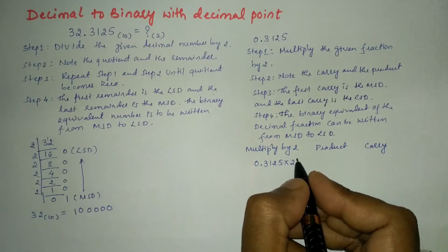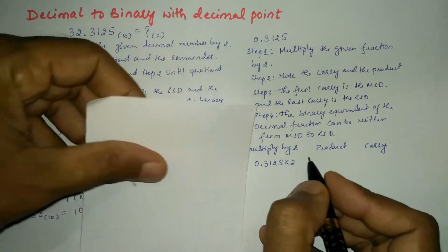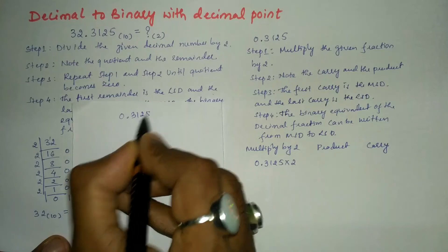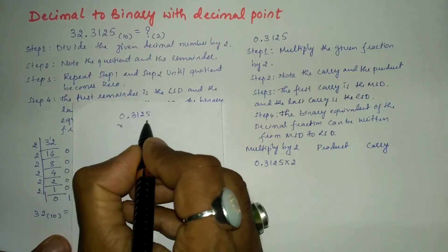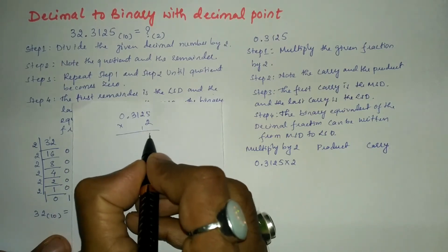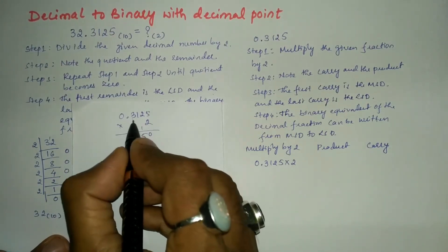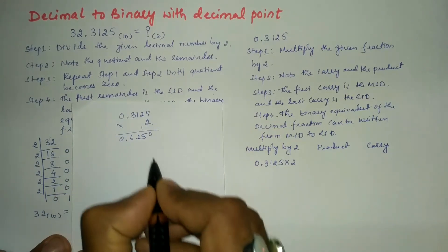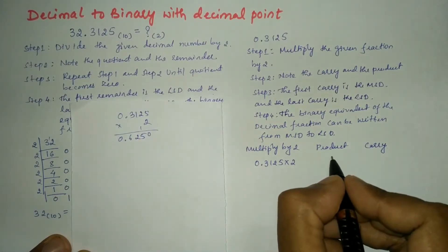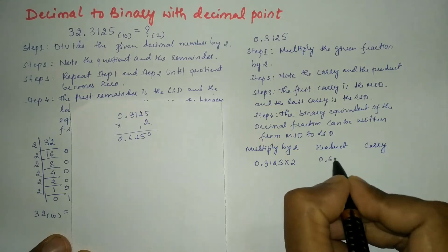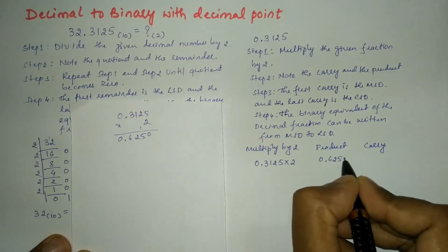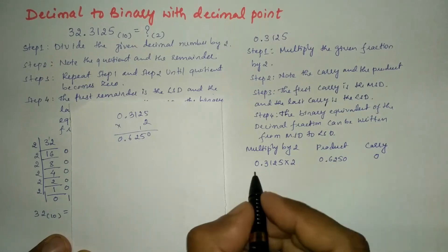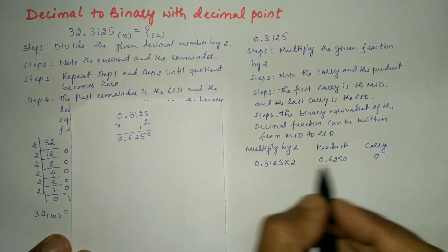0.3125 × 2 = 0.6250. So the product is 0.6250 and the carry is 0. We need to continue multiplying until the product becomes 0.